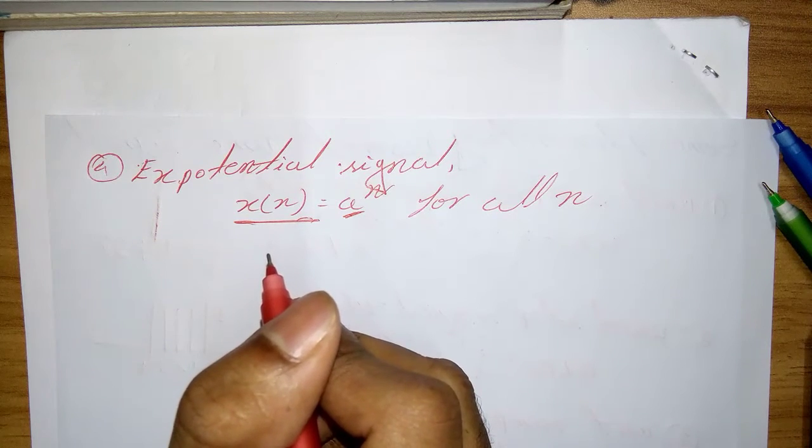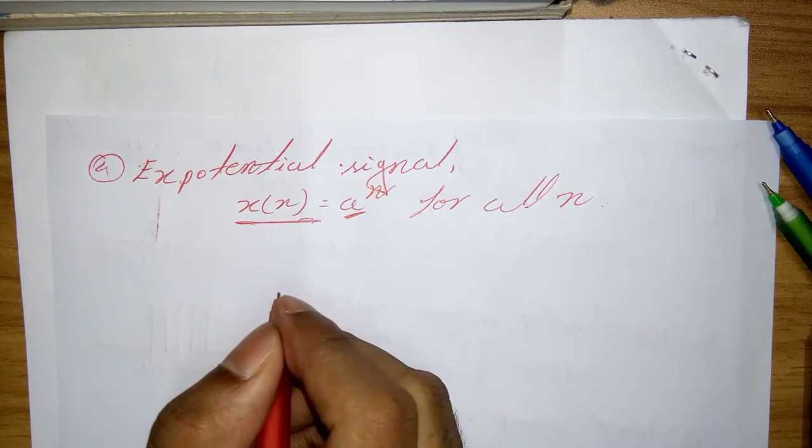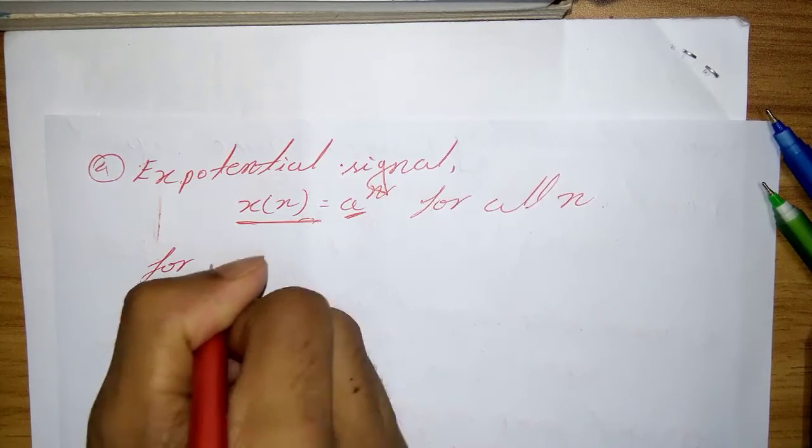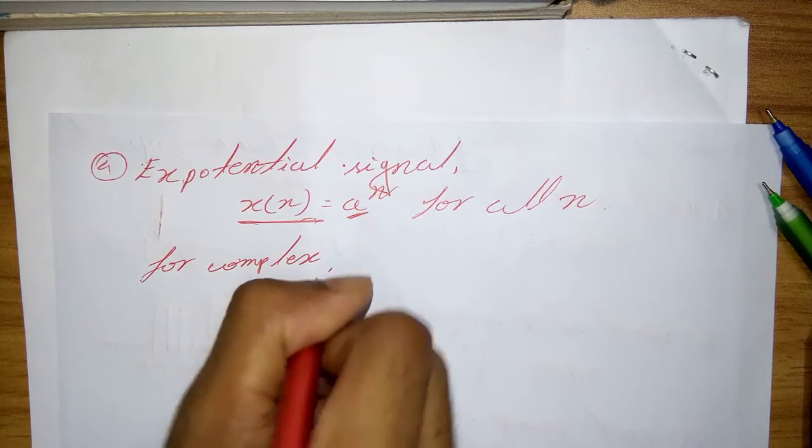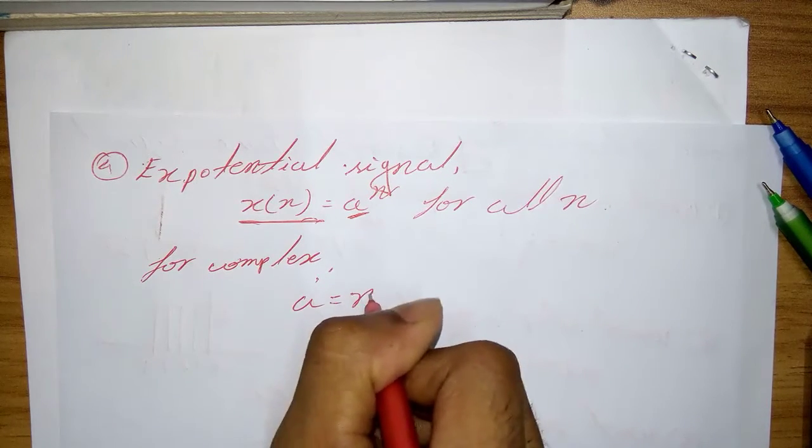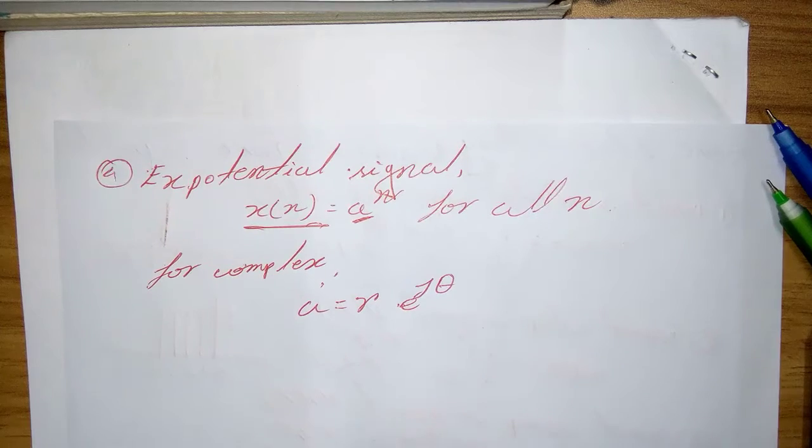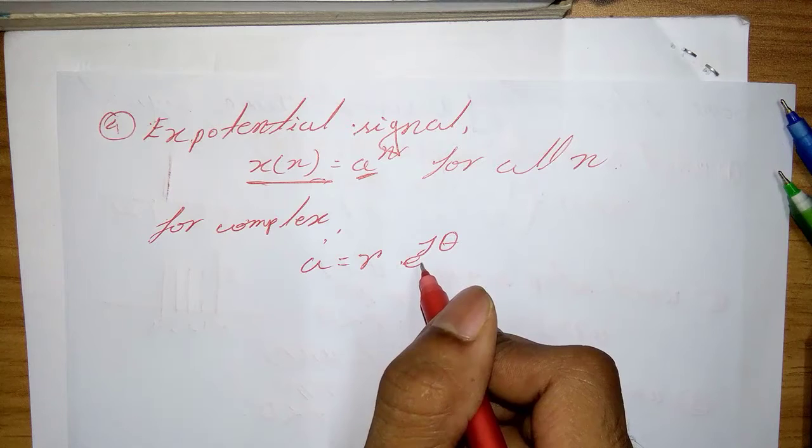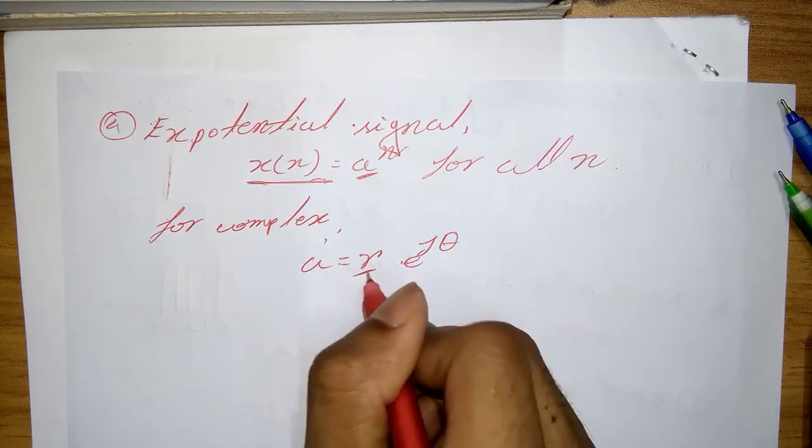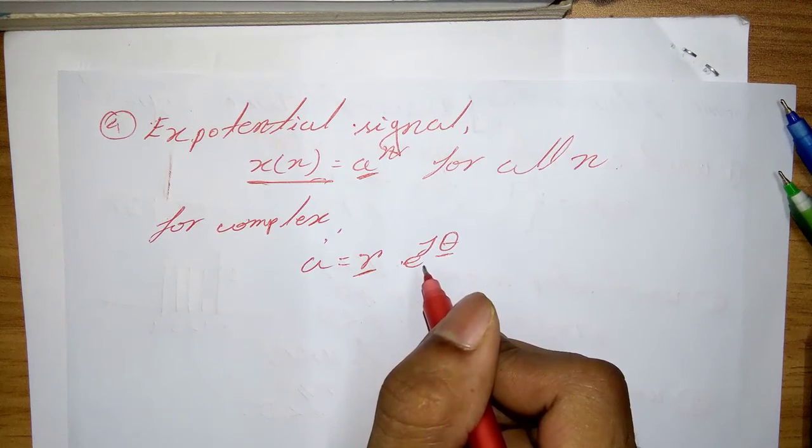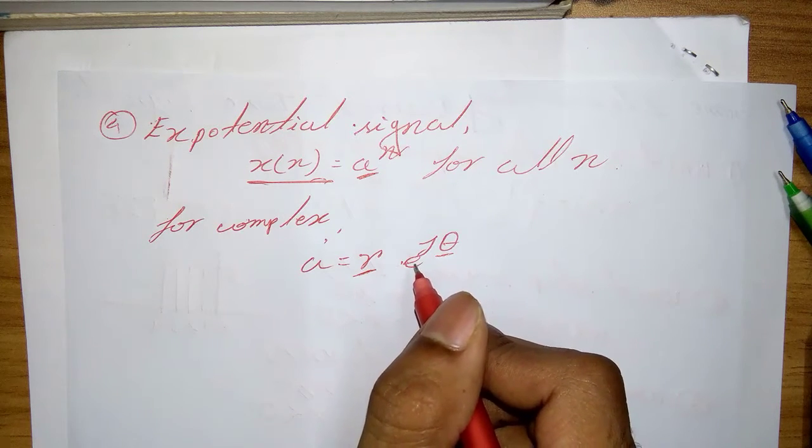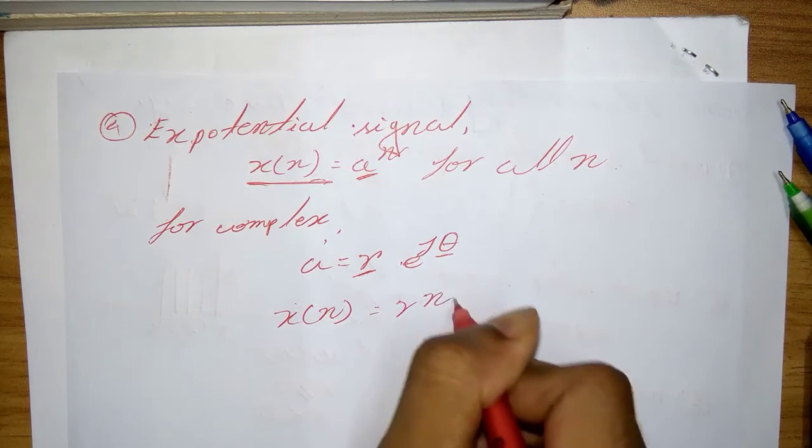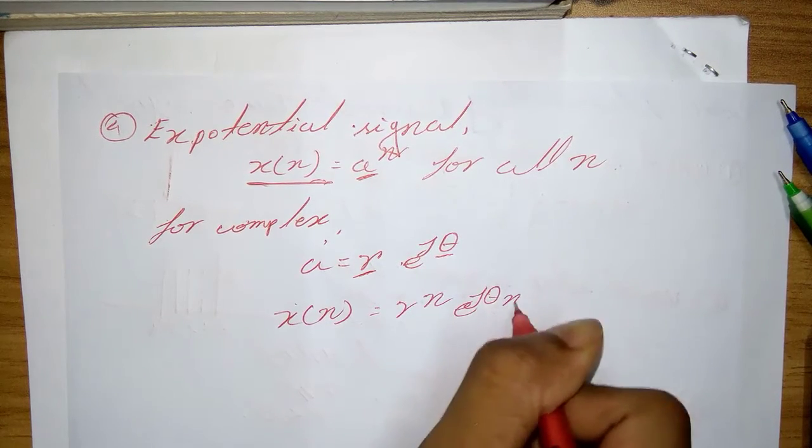And when the parameter a is complex values, it can be expressed as, for complex: a equal r e to the j theta, where r and theta are the parameters. Hence, we can express x of n as r to the power n e to the power j theta n.